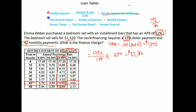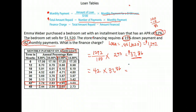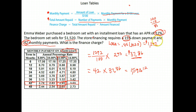Now we need to find out how much we're going to end up paying total when this loan is over. We take the number of payments — this time it was 42 payments — and we're paying thirty-seven dollars and eighty-six cents every time. So we take 42 times $37.86 and we get one thousand five hundred and ninety dollars and twelve cents. That's the amount you're paying back on this loan — but remember, you only borrowed one thousand two hundred and ninety-two dollars.